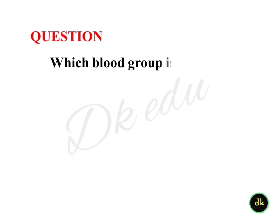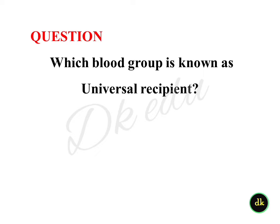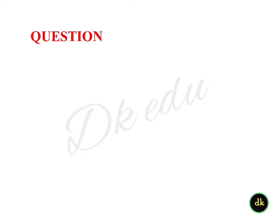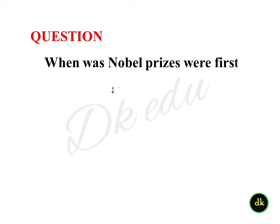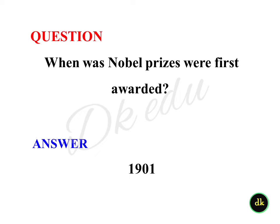Which blood group is known as the universal recipient? Answer: Group AB. When were Nobel Prizes first awarded? Answer: 1901.